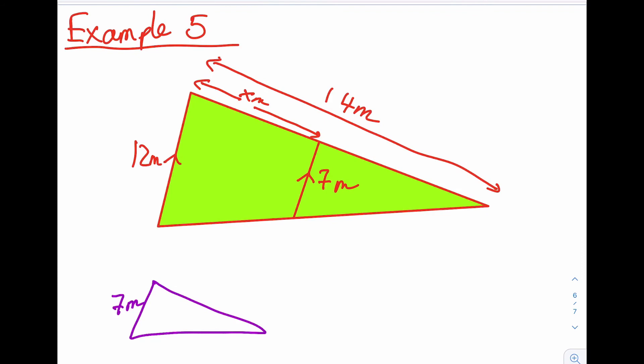So we could call that side 14 take away X. And then let's look at our big triangle. So looking at the big triangle, we've got 12 on the base. And then all the way along, we've got 14.